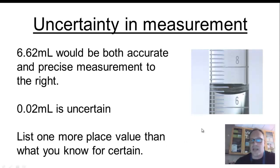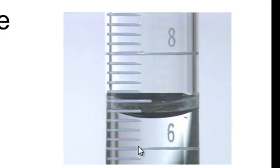Now, when I look at this picture here again, and I've just made it a little bit smaller for this slide, 6.62 milliliters would be both an accurate and a precise measurement to the right here on this picture. So let's look at this. If this line right here is 6, and that line right there is 7, and all of these marks show a gradual difference between those measurements, you've got to do some math here.